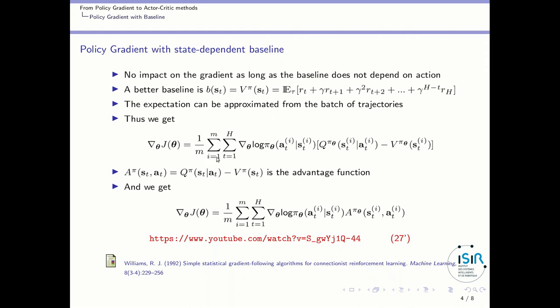It happens that the action value function minus the value function for a given policy is called the advantage function. So, finally, we get this formula, which is the final policy gradient formula that everyone uses everywhere. And using this baseline has been shown in the reinforced algorithm from Ronald Williams in this paper.